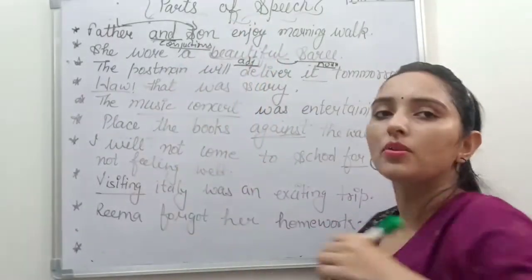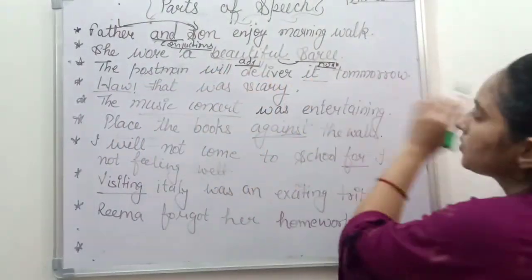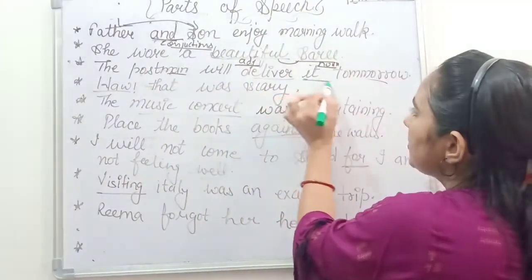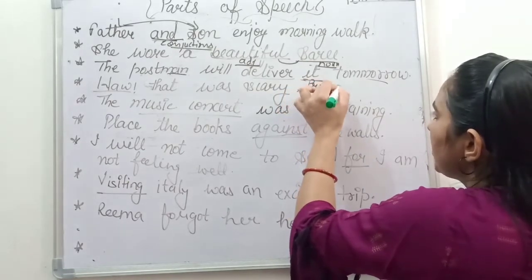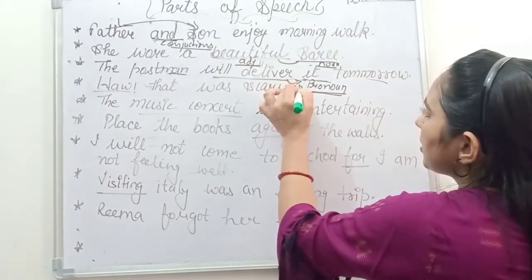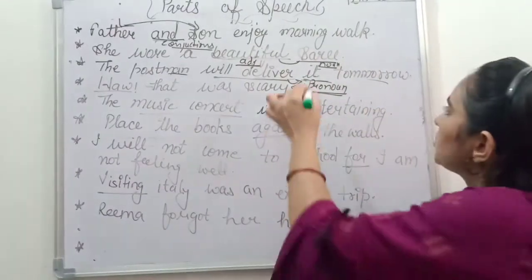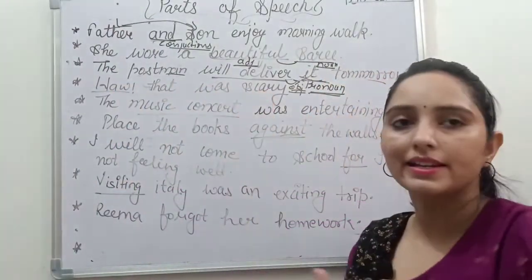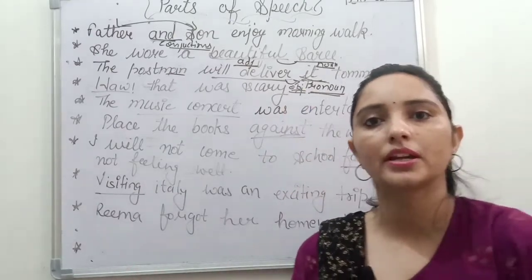Next practice sentence: 'She wore a beautiful sari.' What type of sari? Beautiful — so 'beautiful' is describing the noun 'sari,' making it an adjective. Adjectives describe nouns and pronouns. Next: 'The postman will deliver it tomorrow.' The underlined word is 'it' — 'it' is a third person pronoun acting as the object of 'will deliver.' The object is typically a noun or pronoun, and here 'it' is our pronoun.